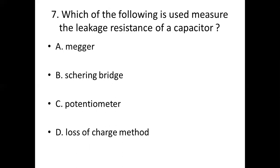Seventh bit. Which of the following is used to measure the leakage resistance of a capacitor? Option A, megger; Option B, Schering bridge; Option C, potentiometer; Option D, loss of charge method. Answer is B, Schering bridge.